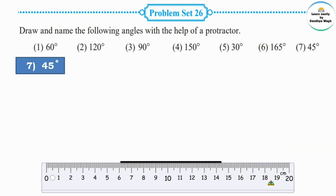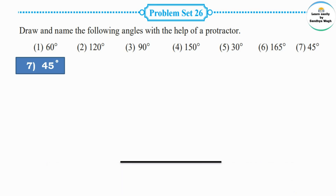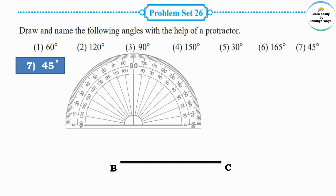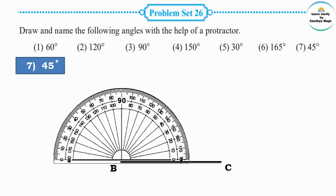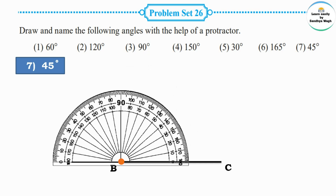The next measurement is 45 degrees. We need to draw a 45 degree angle. First draw the arm with a ruler and name it BC. We need to draw a 45 degree angle at point B. Place the protractor with its center on point B. B is the vertex of this angle. Start counting from the zero marking: 10 degrees.